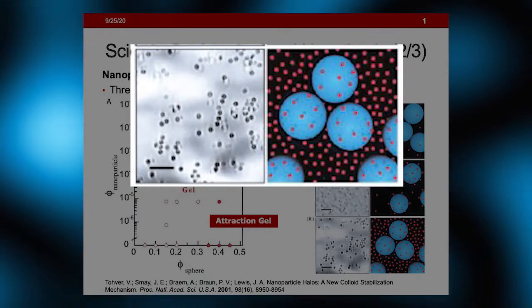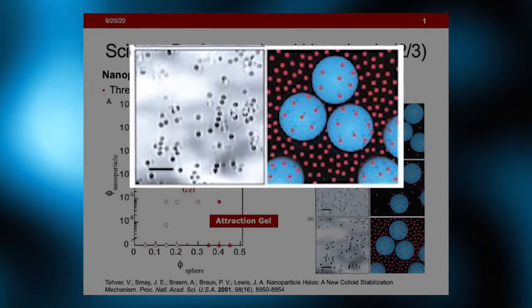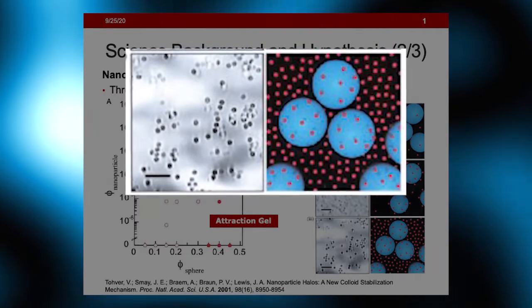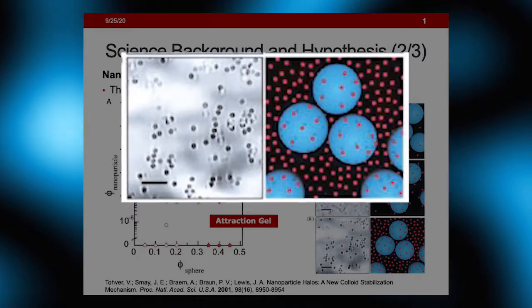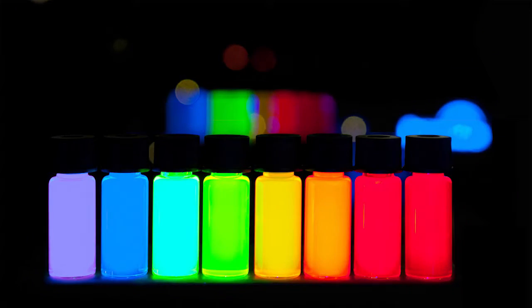And then you have a smaller particle that will act as the light harvesting particle, and that particle's job is take the light, create the electron. And those are the quantum dots.